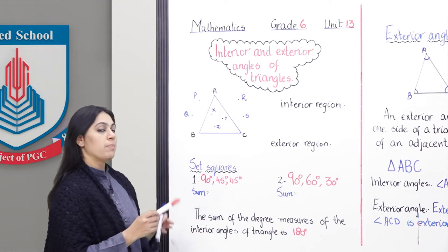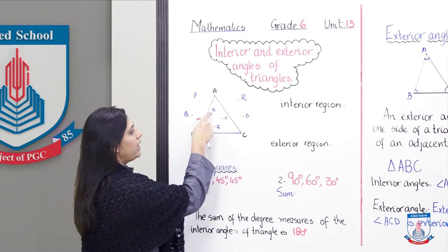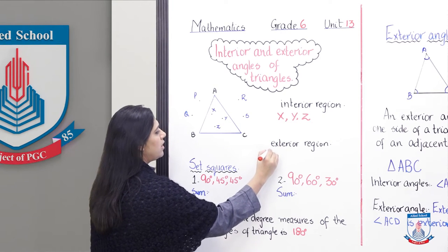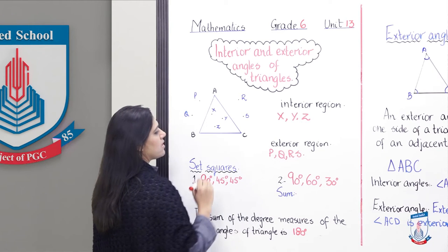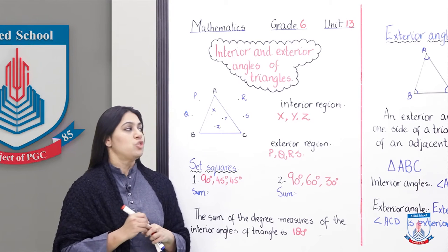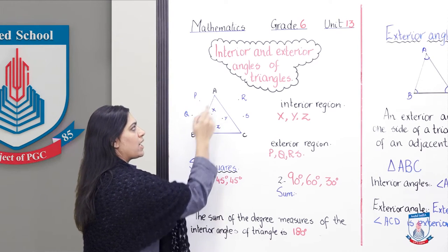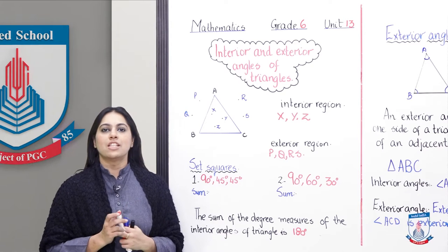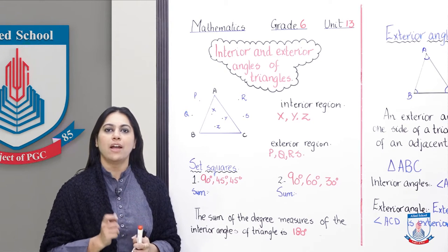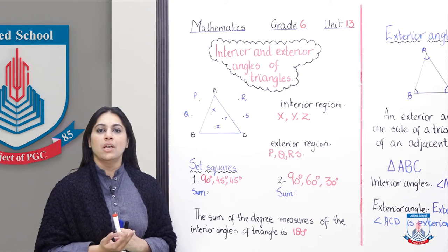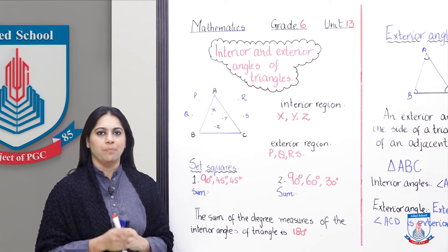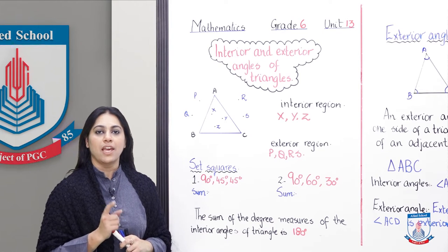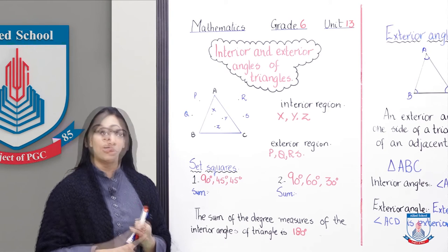So let's figure out which points are in the interior angles. Children, we have an idea that inside the triangle will be called interior angles. If you look at your geometry box set squares — an instrument used to measure and draw sides — you will find two set squares. One set square has angles of 90 degrees, 45 degrees, and 45 degrees.